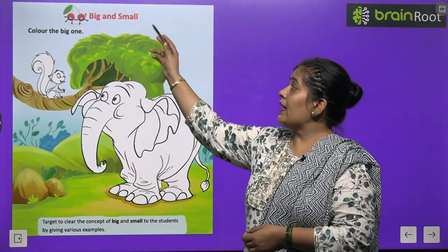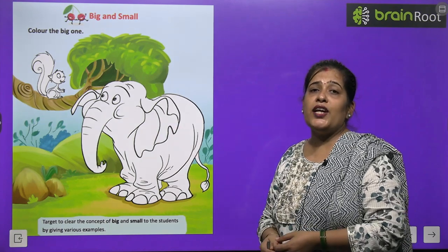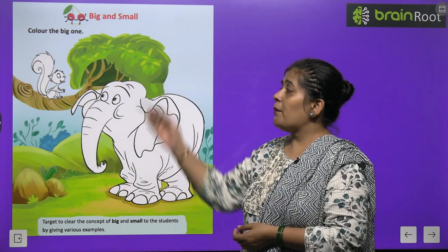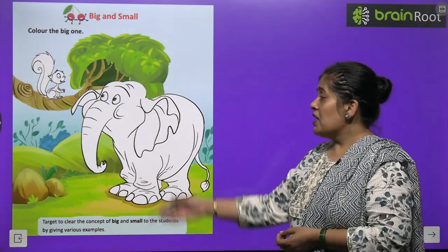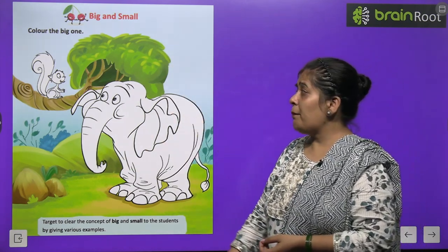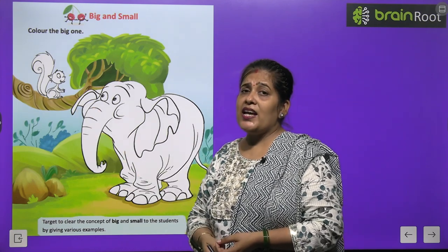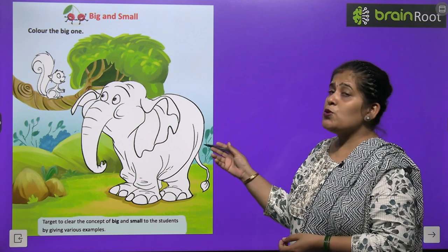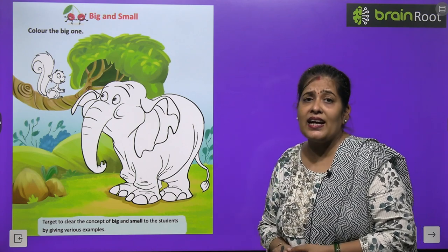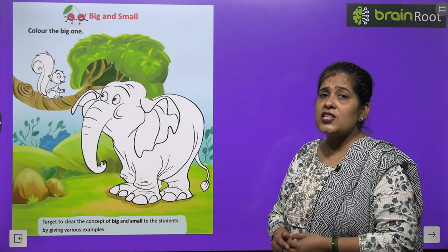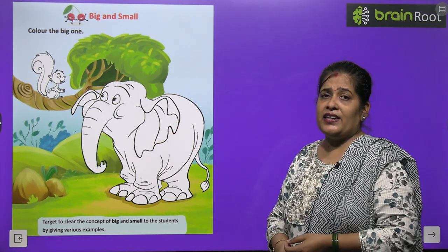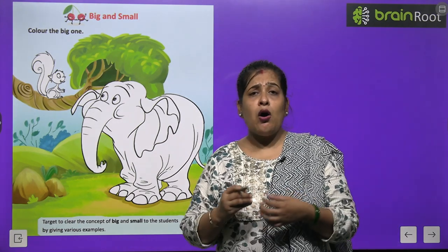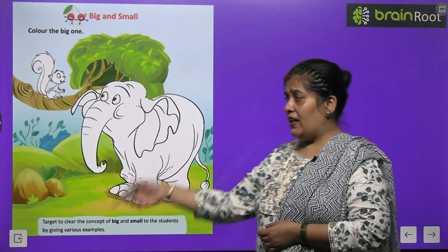Now, big and small. Big کا مطلب ہوتا ہے بڑا اور small کا مطلب ہوتا ہے چھوٹا. یہاں پہ ایک elephant کی پچھر ہے اور ایک squirrel کی. آپ کو ان میں سے جونسی پچھر بڑی ہے اس کو بہت سندر سے کلر کرنا ہے. Elephant کی پچھر بڑی ہے، اس میں آپ بہت سندر سے کلر کریں گے.